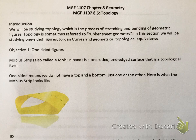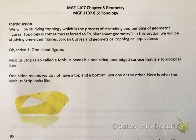The introduction: we're going to be studying topology, which is the process of stretching and bending of geometrical figures. Remember in section 8.5 we had rigid motion — we were picking up a figure and moving it somewhere else without stretching or morphing it. Topology is sometimes referred to as 'rubber sheet geometry' because we can stretch and morph a figure. In fact, in some old movies, someone morphing into a werewolf would be considered topology.